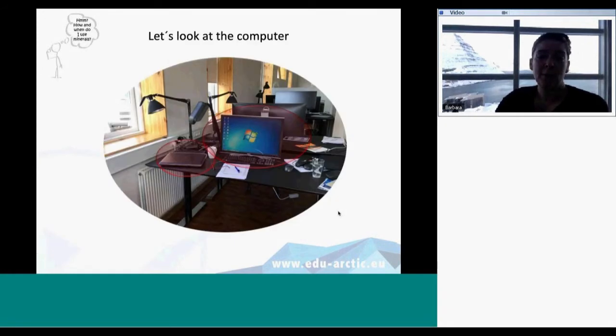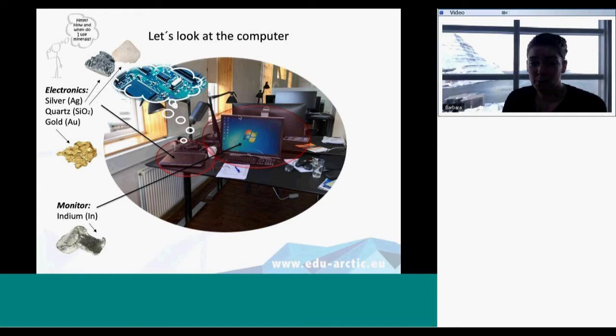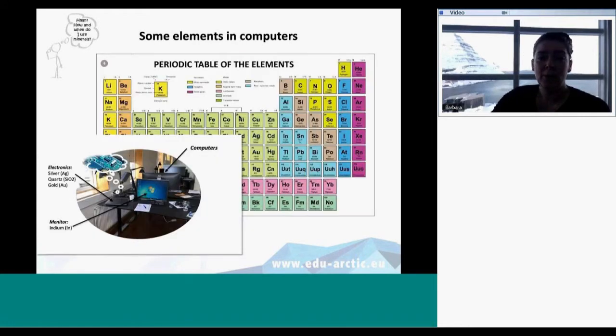If we go a little bit further and look at the computer, we will start with the electronics inside that contains a lot of different minerals, but I just chose a few. It contains, for example, silver, and it contains quartz, and it contains gold very often. If you look at the monitor, they use an element called indium. That's what they use so we can have touch screen computers and phones and everything. If we look at where it's found in the periodic table, you can see the silver, the silicon, the oxygen, the gold, and you'll find the indium there.